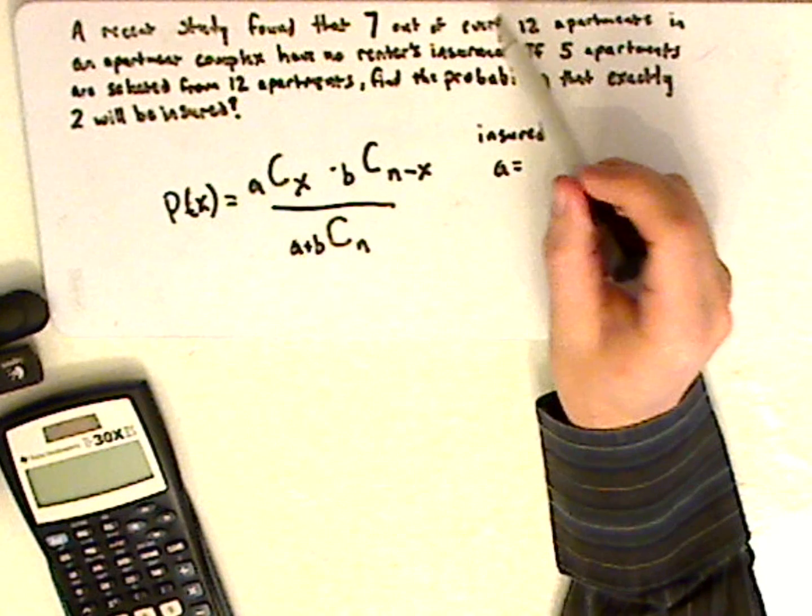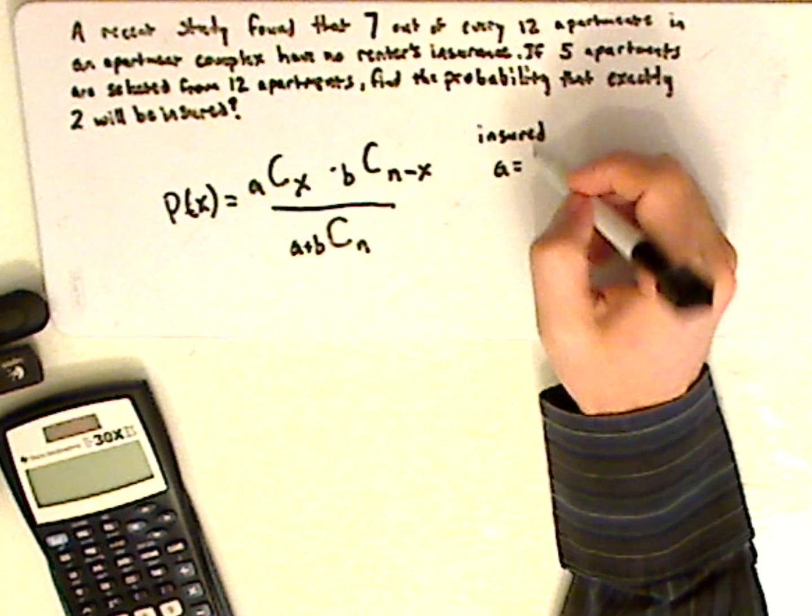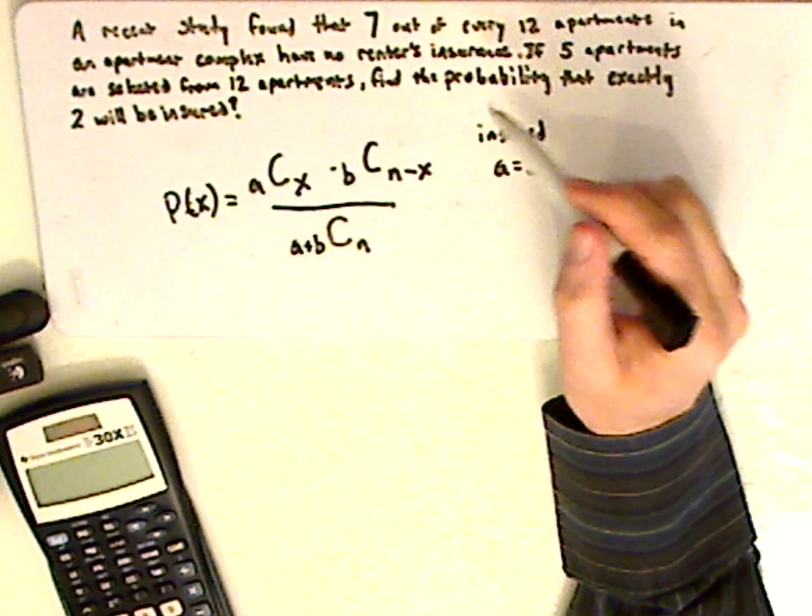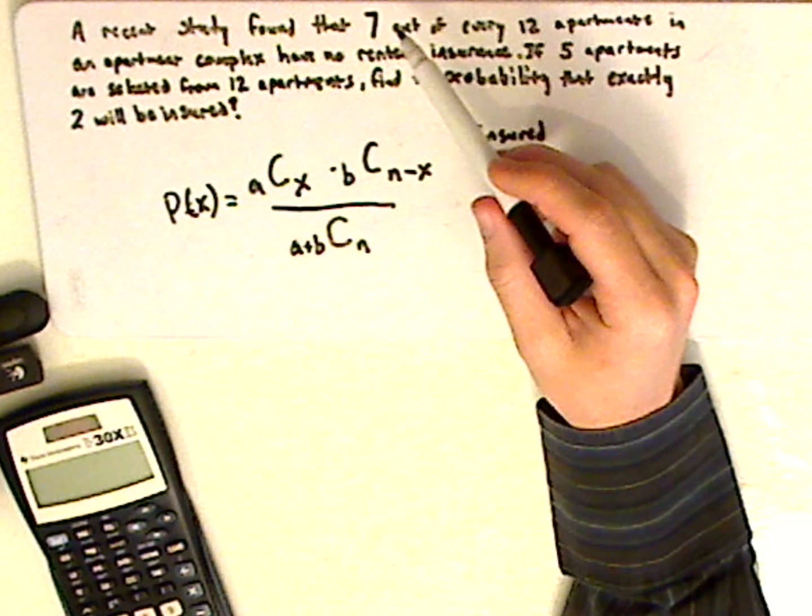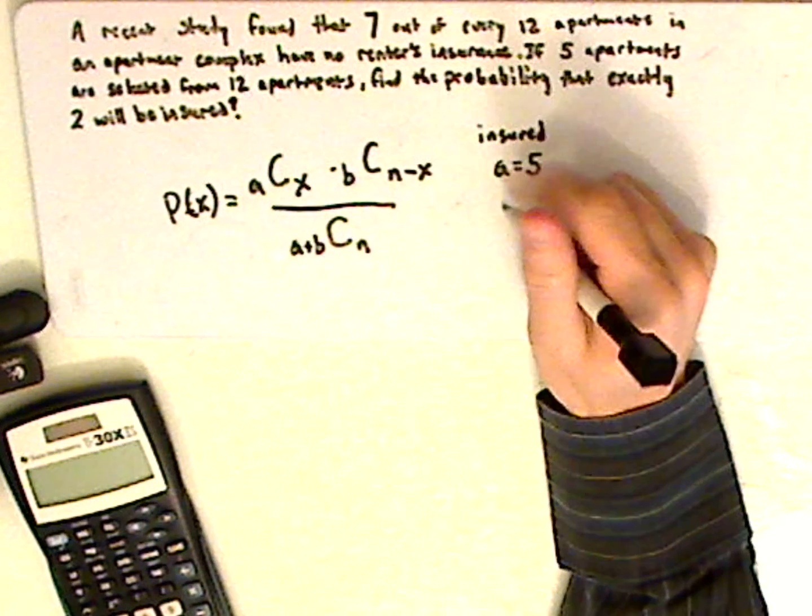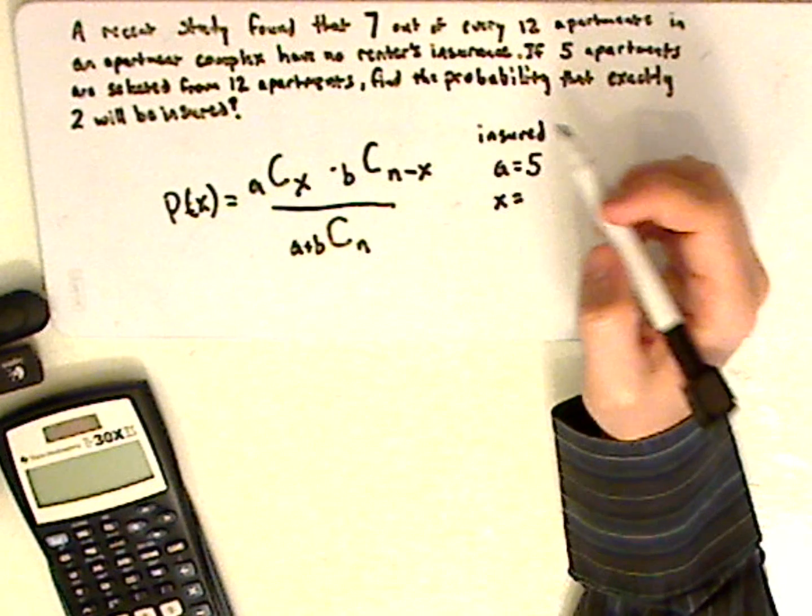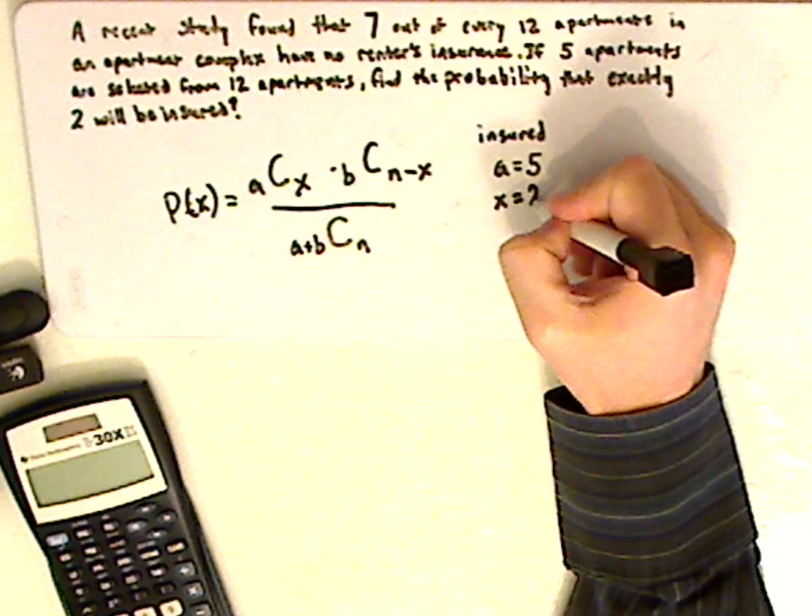So this is not insured, so the number that are insured is 5. And then you have X, that's the number you're choosing, in reference to insured, which would be 2.